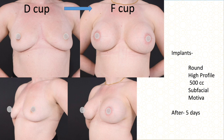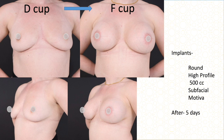Another D cup patient — not as much sagging, nipple in good position, but some loose skin and sagging underneath the breast. She wanted fullness and lift, and she desired 500 cc. This is usually not my preference — I generally don't prefer to use more than 400 cc — but in special situations where the patient understands the long-term consequences, we do use such large implants. I used 500 cc sub-fascial Motiva high-profile implant, and this was just five days after surgery.